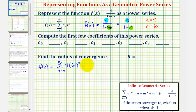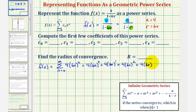When n equals zero, we have 4 times (6x) to the zero; when n equals one, 4 times (6x) to the first; when n equals two, 4 times (6x) squared; when n equals three, 4 times (6x) to the third; and when n equals four, 4 times (6x) to the fourth, and so on. The last term shown is degree four, so its coefficient is c sub four.